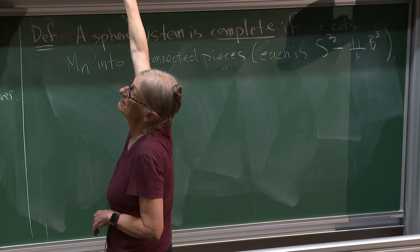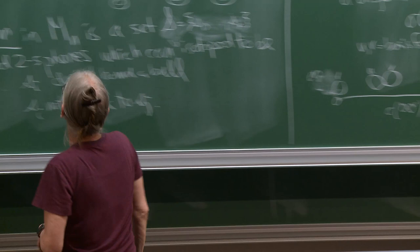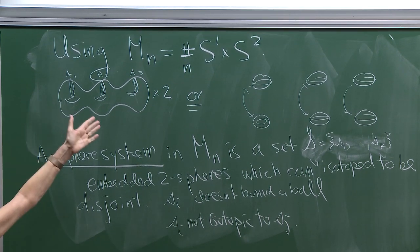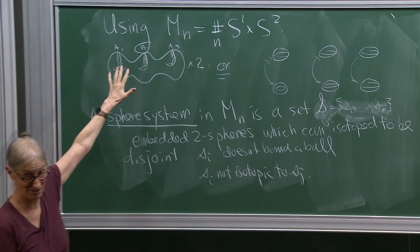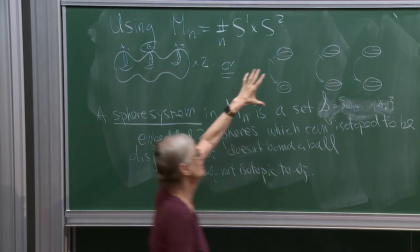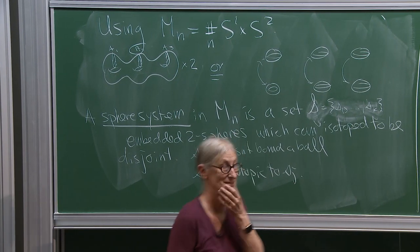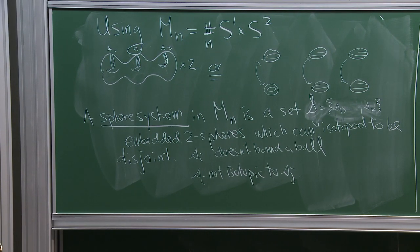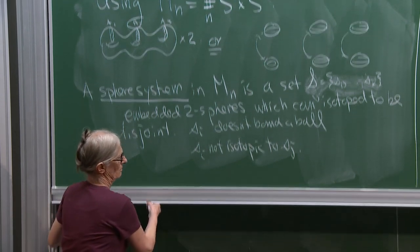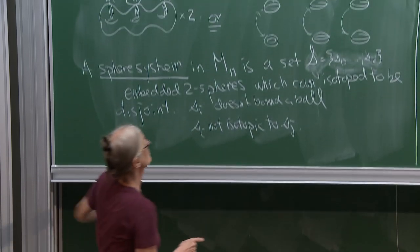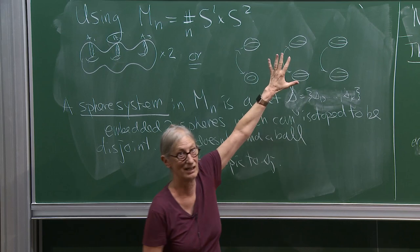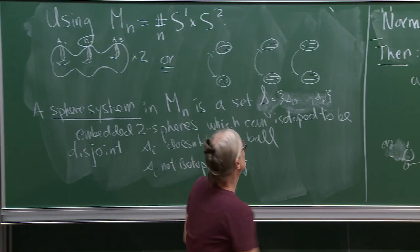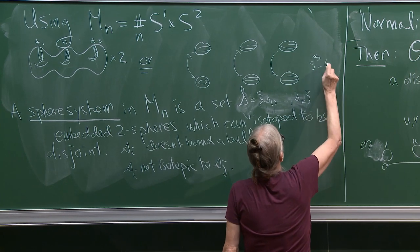For example, here's a sphere system: A1, A2, A3. I've only drawn half of the picture because I'm going to double them to get spheres. There are three spheres — looks like there are six, but they're glued together. If I cut along these spheres, I get a three-ball with six balls missing: S3 minus six B3s.